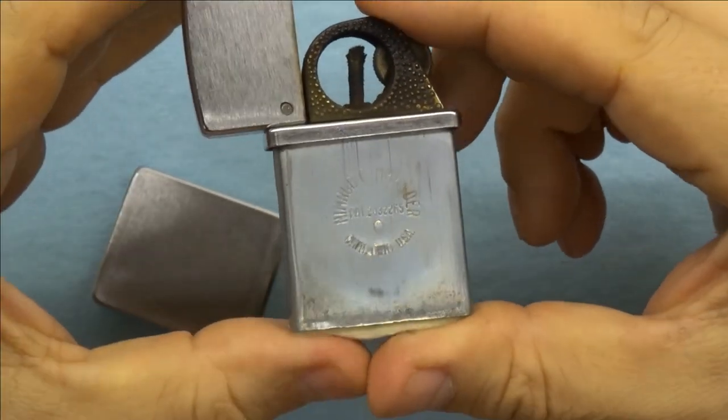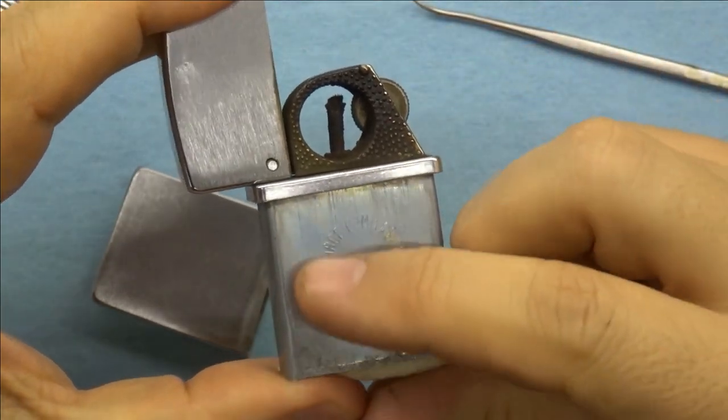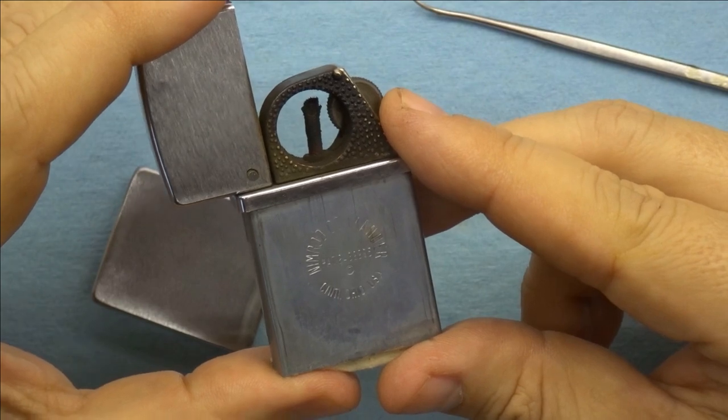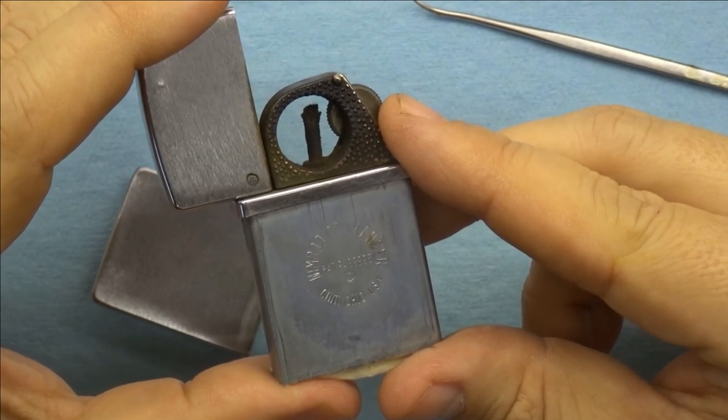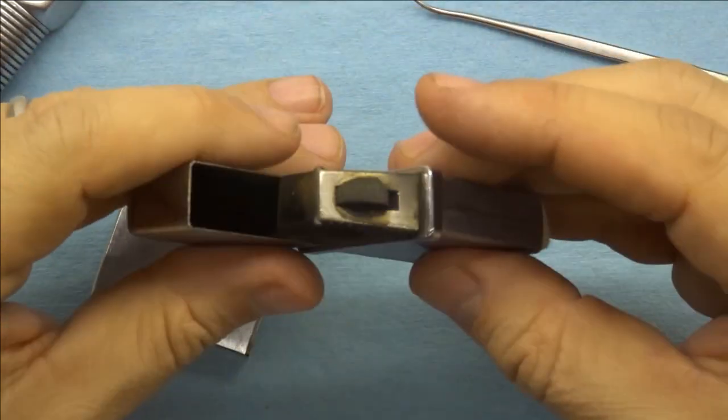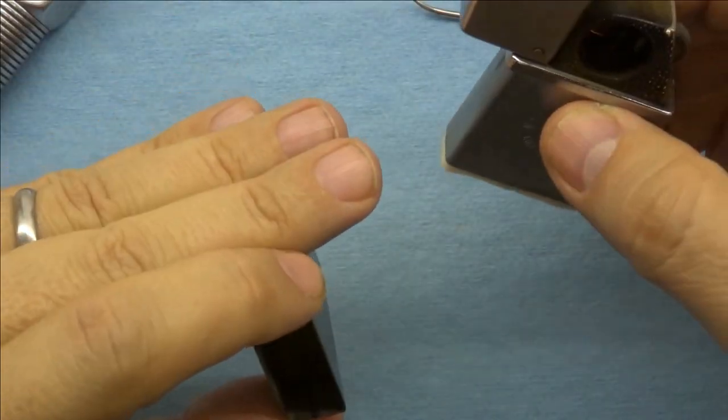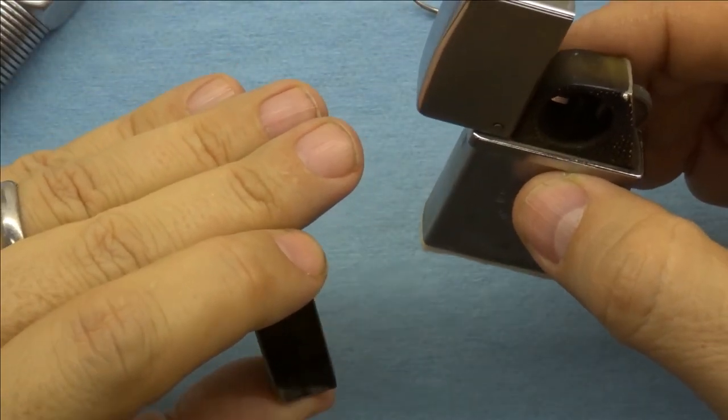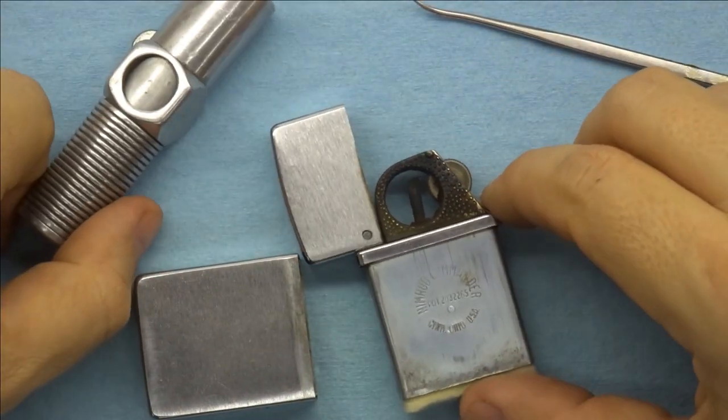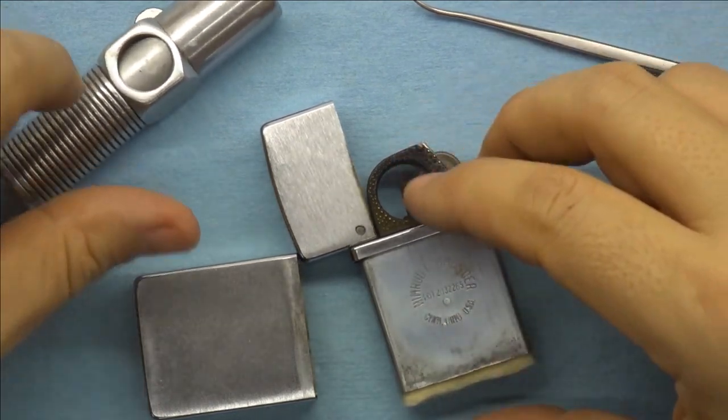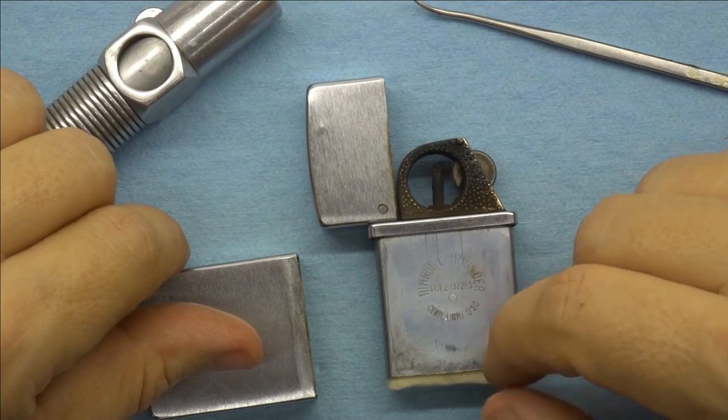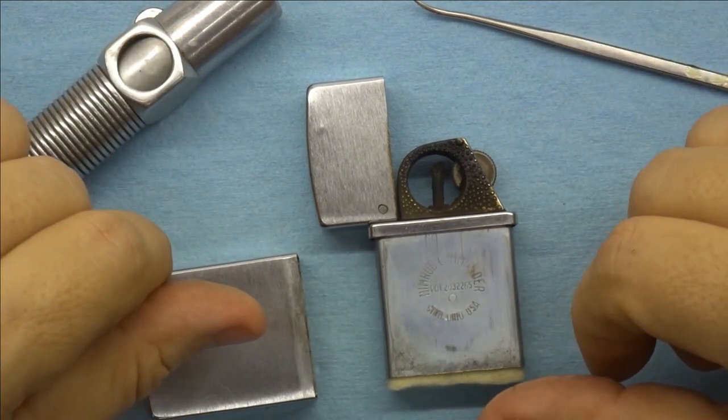And you can see here on the inside of the insert there's some wordage here and it says Nimrod Commander. It has the patent number and then it says Cinti Ohio USA. And those are the only markings on the pipe. And I'm not sure if I said this earlier but there's unfortunately no way to date any of these pipes because they all use the same patent number. They didn't have any unique markings like Zippo has. So this could have been made in 1947. It could have been made on in the last run. We just don't know.